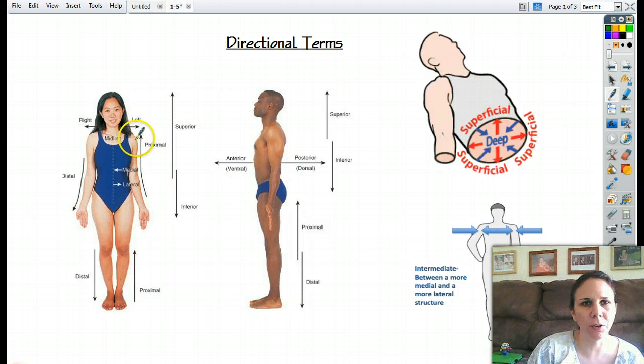Okay, so her shoulder is lateral to her chest bone. Her ear is lateral to her nose. It's away from the midline. So medial, towards the middle. So her nose is more medial than her eyes. And then lateral, more towards the outside.